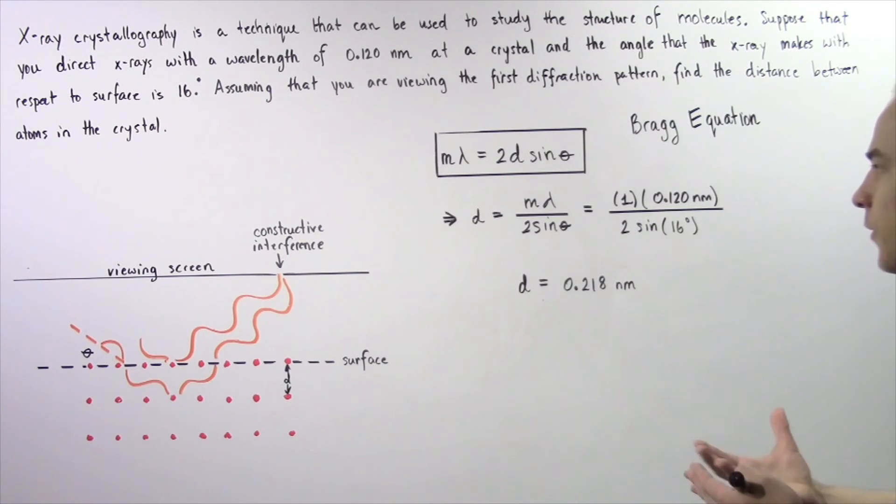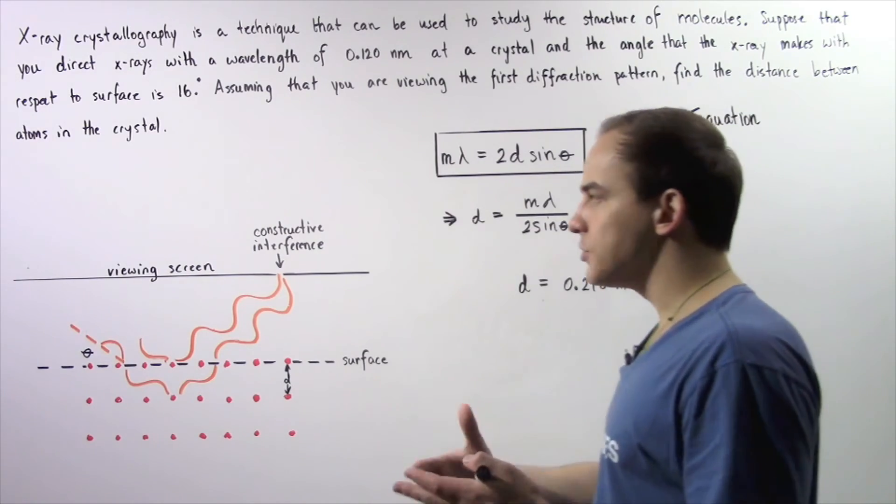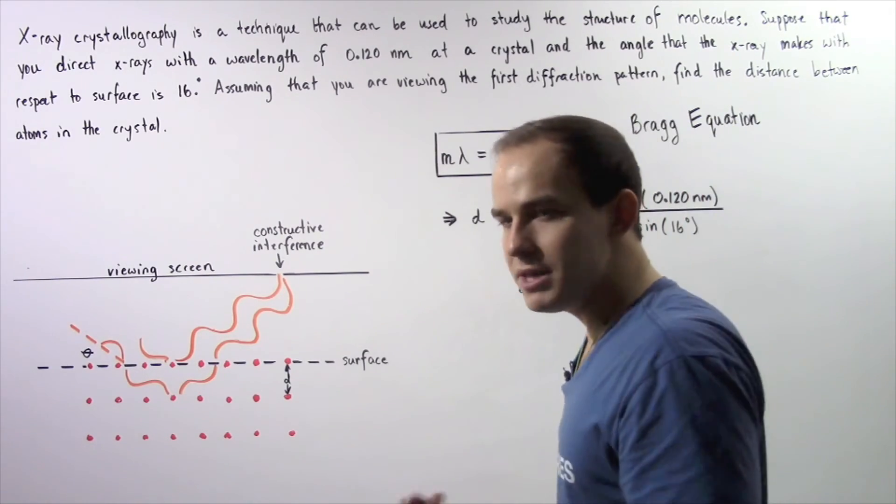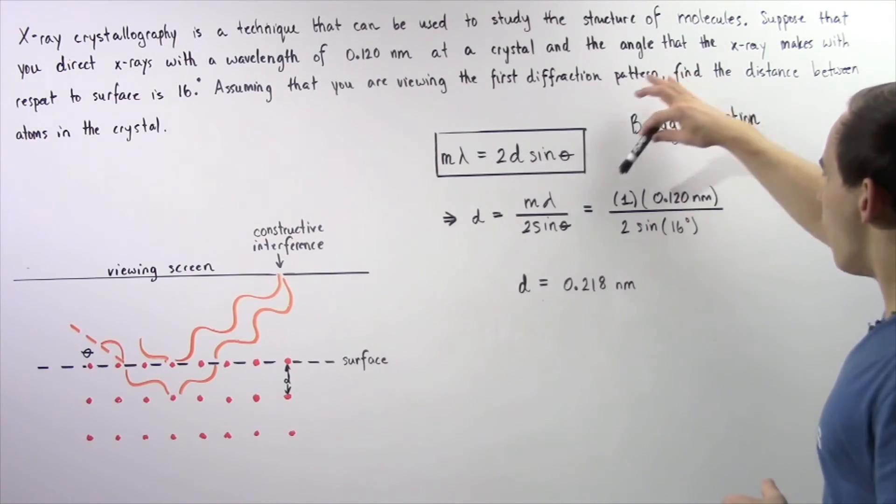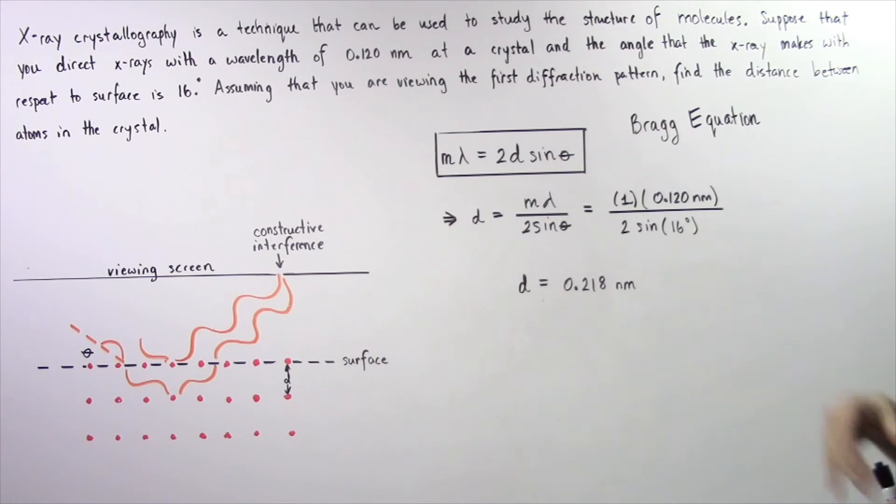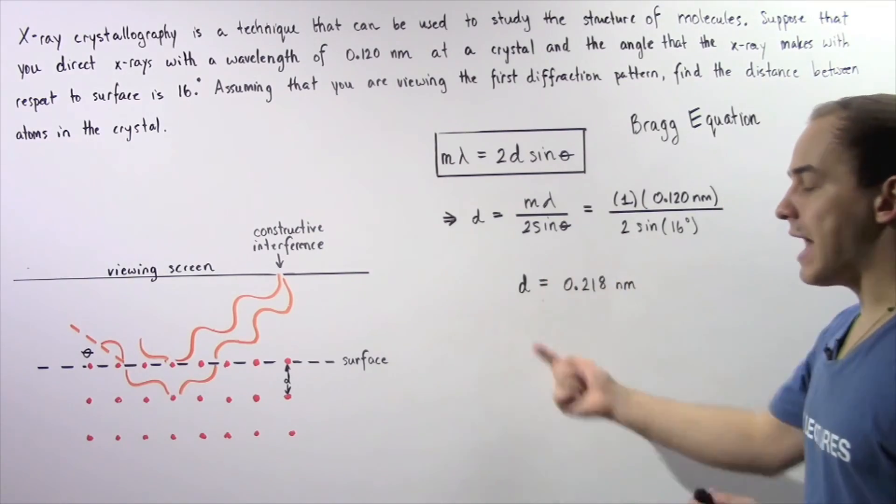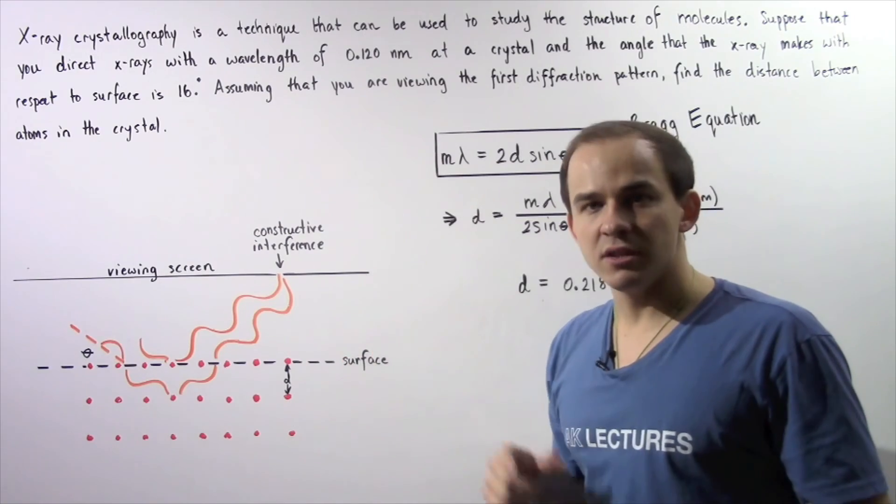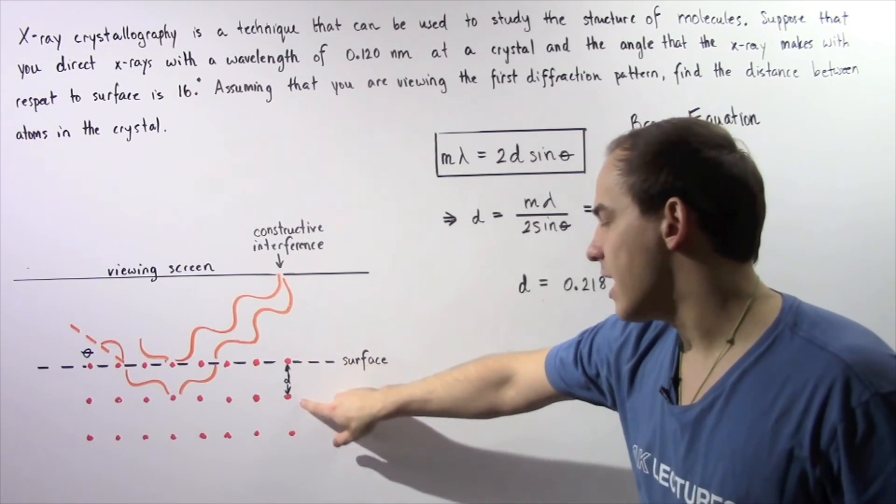Notice we don't have to convert from nanometers to meters because we want our distance in nanometers. So, 1 multiplied by the wavelength divided by 2 times sine of 16 gives us about 0.218 nanometers. This is our distance between any two atoms within our crystal lattice.